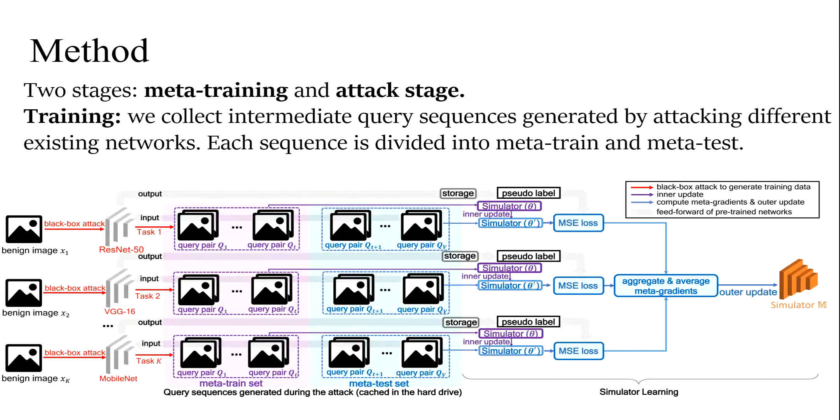The method is divided into two stages: meta-train stage and attack stage. In the training, we collect different existing pre-trained networks and split them into different tasks. Each task consists of the query sequence by attacking one network. The first t-query pairs form the meta-train set, and the later query sequence is called the meta-test set. Meta-train set corresponds to the inner update stage, and meta-test set corresponds to outer update stage.